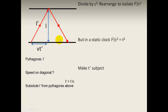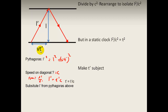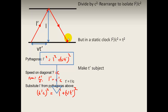Using Pythagoras: L prime squared equals L squared plus VT prime squared. The speed on the diagonal is distance divided by time, which is L prime divided by T prime. So L prime equals speed times time, meaning L prime equals C times T prime. Substituting: T prime times C, all squared, equals L squared plus VT prime squared.